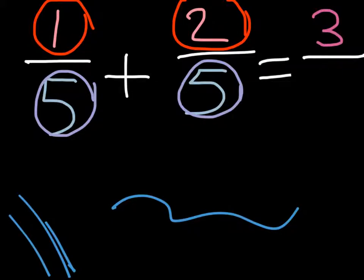When you are adding fractions with the same denominator, the denominator will not change. So therefore, 1 fifth plus 2 fifths is equal to 3 fifths.